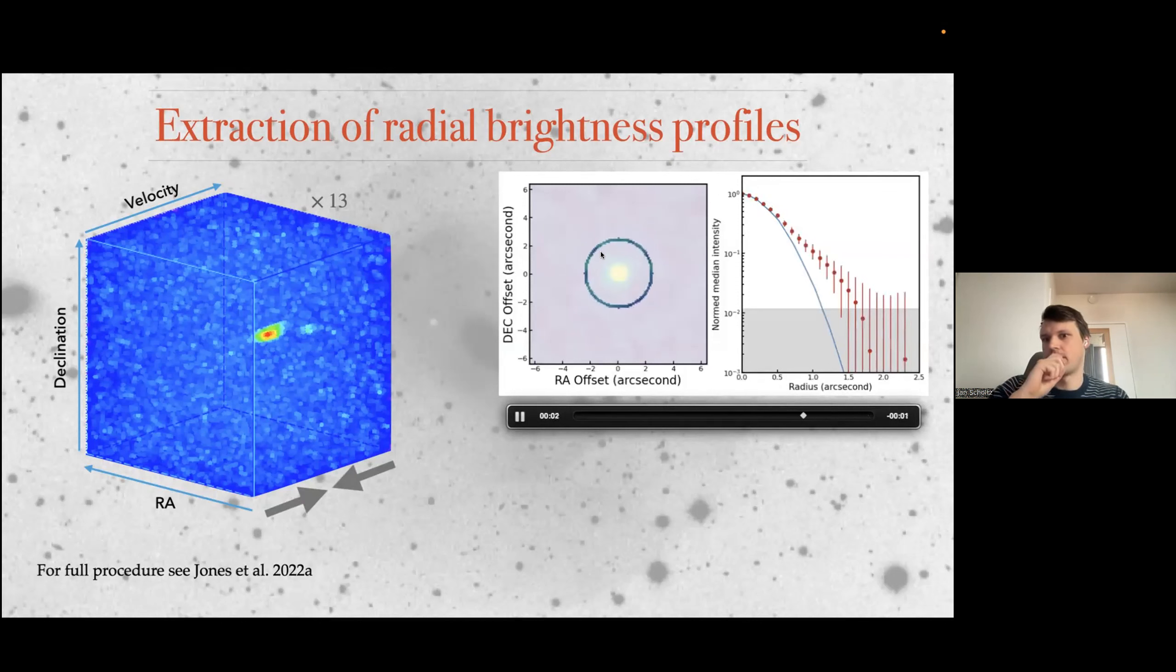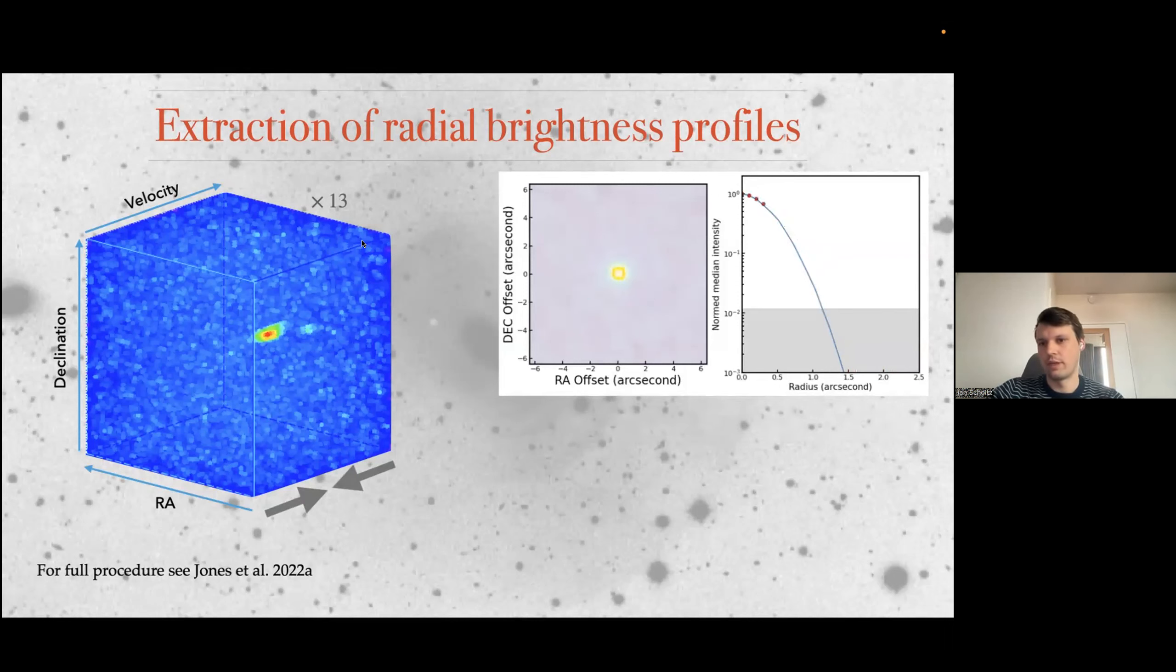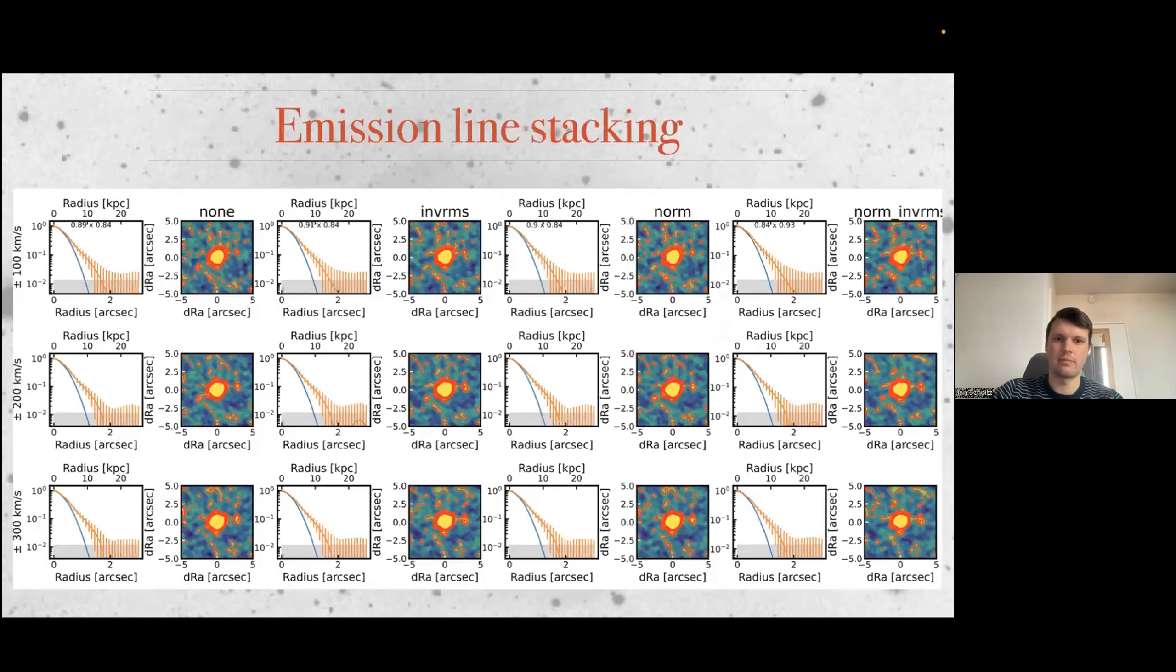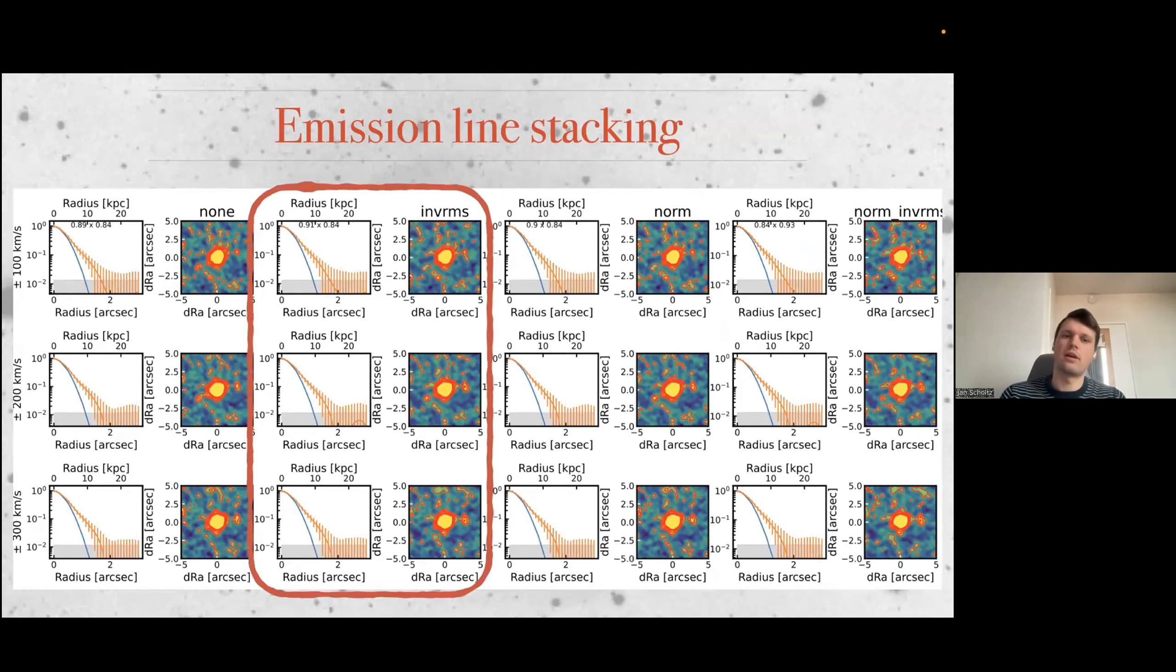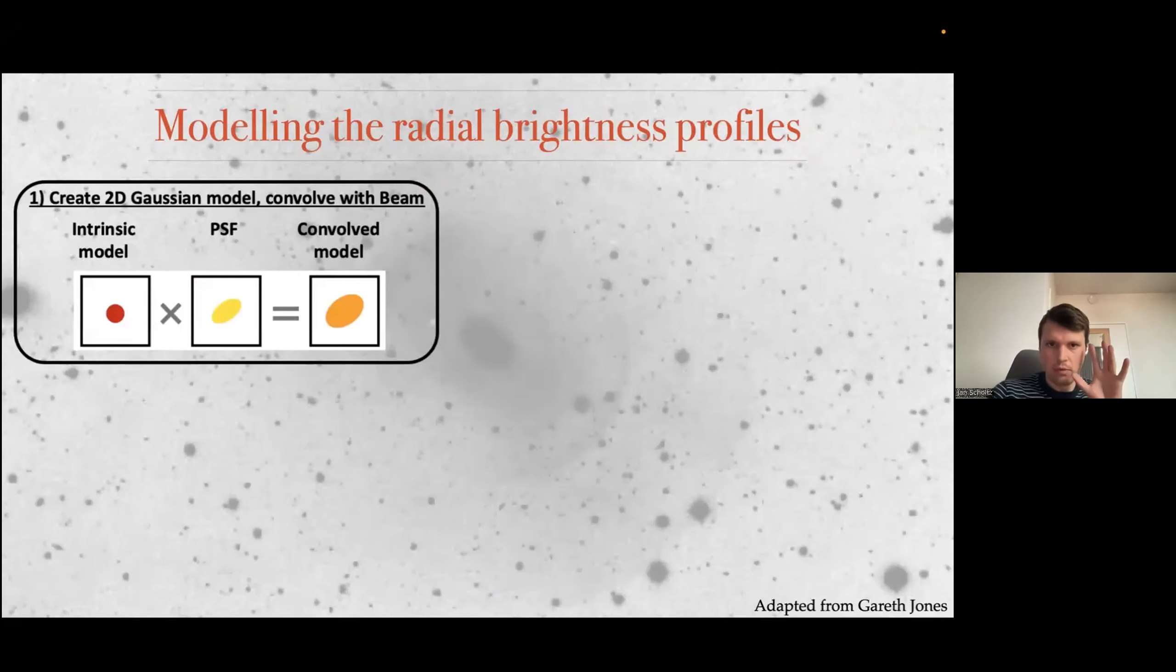But more important is how we modeled the stack. So we have a stack cube, you have a galaxy in it. What you want to do is you are going to collapse the cube along the frequency channel or along the velocity axis in order to create a moment map. And then you're going to have a ring aperture, and you are going to slowly extract the median brightness inside a ring aperture. This is how it looks when you do all of the different stacking weightings. You have either no weighting, you have the inverse RMS where you penalize observations with large noise, then based on the peak of the emission, and then the combination of different schemes.